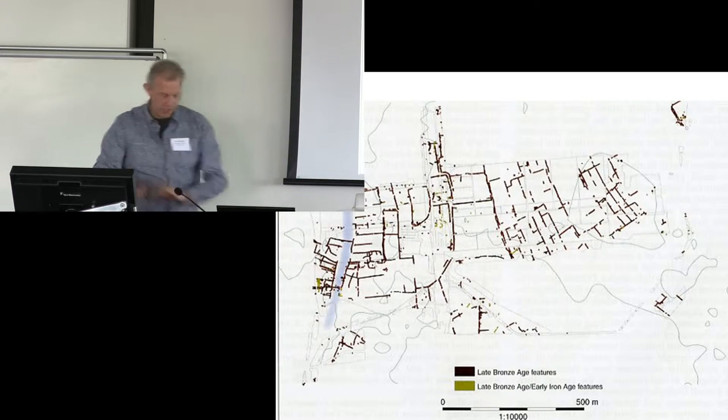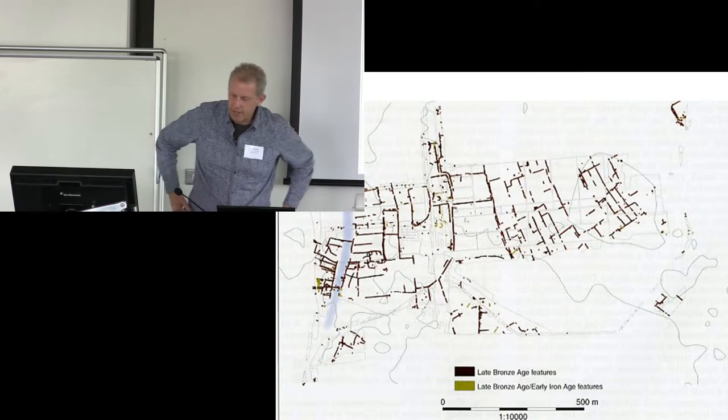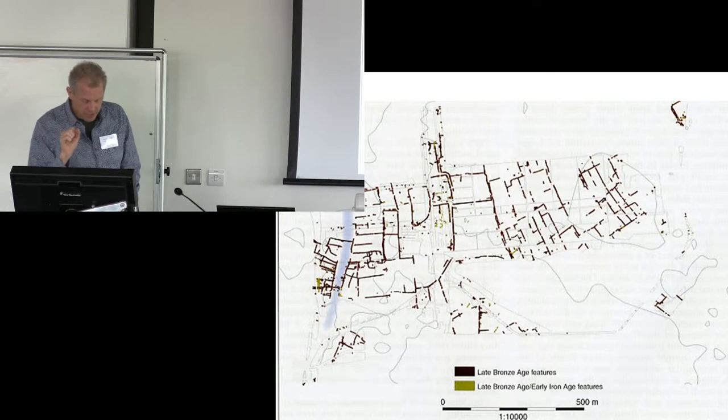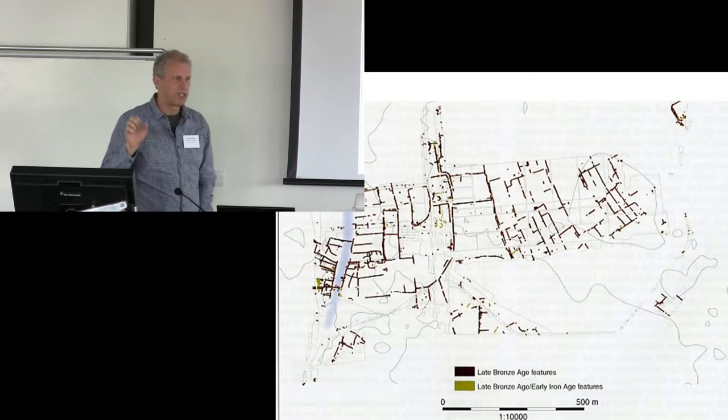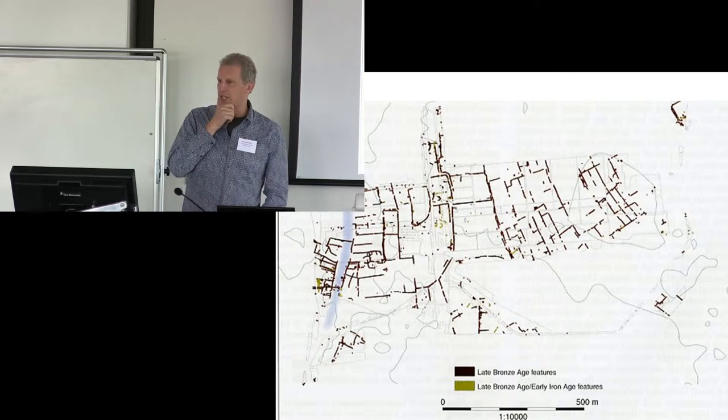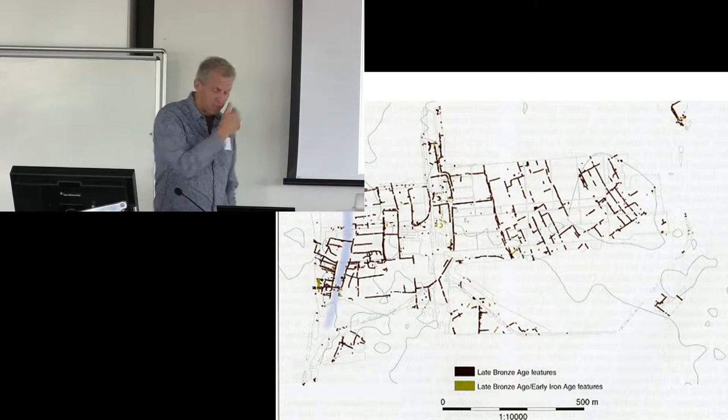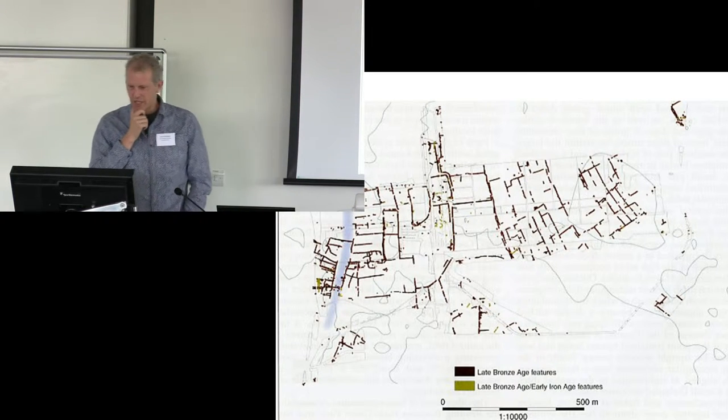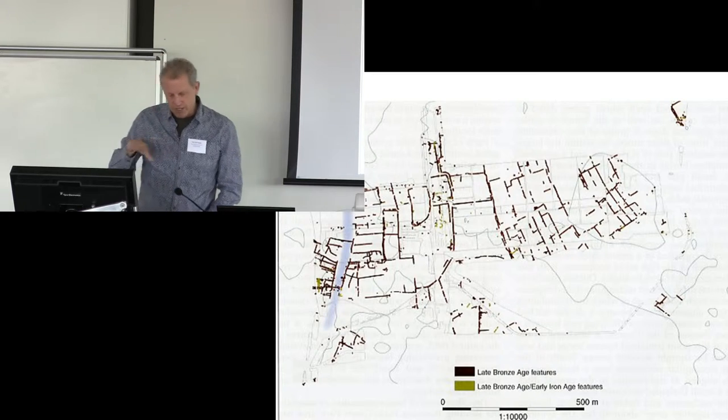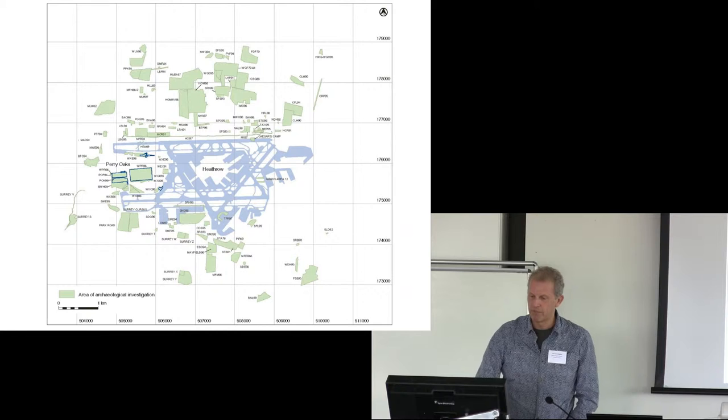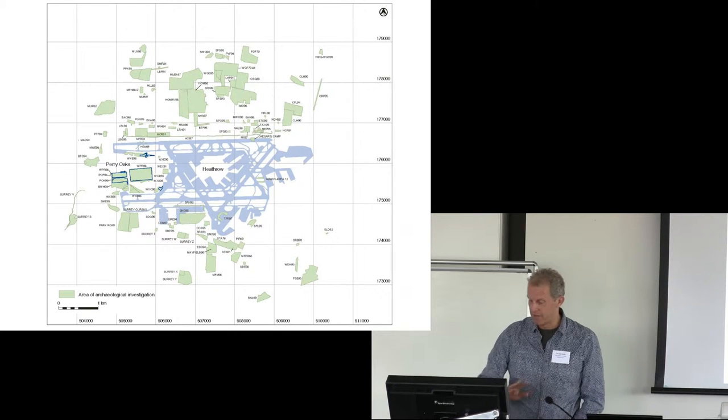There have been two big revolutions in English-British archaeology over the last 20 or 30 years. One is the one we talked about most, which is the post-PPG-16 world. So here we have Perry Oaks, a Bronze Age, a late Bronze Age field system in this particular instance. Over the last 25 years almost, we've become accustomed to large-scale excavations which have revealed the landscape on a scale and level of detail that we've never seen before.